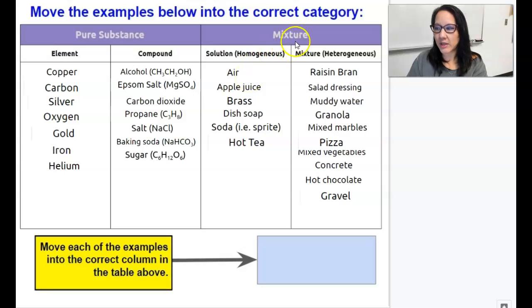If you look under solutions, which is one of our types of mixtures, there's air, apple juice, brass, which is a metal alloy, dish soap, soda, and hot tea.